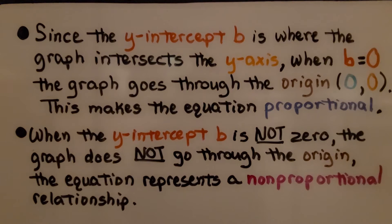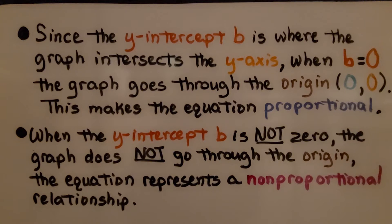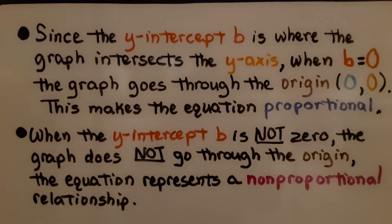Since the y-intercept b is where the graph intersects the y-axis, when b equals zero, the graph goes through the origin at x equals zero, y equals zero. This makes the equation proportional. When the y-intercept b is not zero, the graph does not go through the origin, and the equation represents a nonproportional relationship.